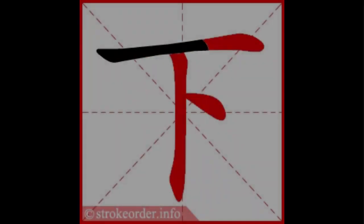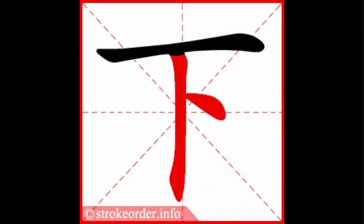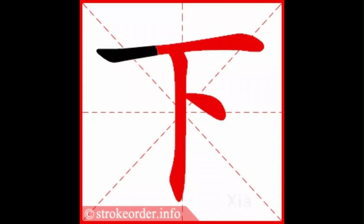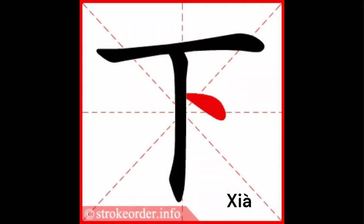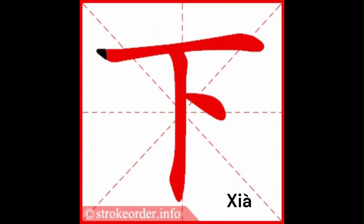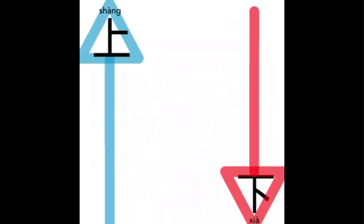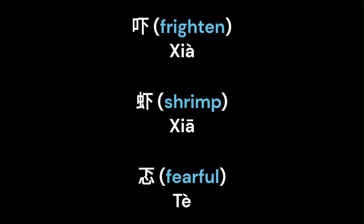In today's video, we'll teach you the Chinese character for down, 下. This is a fun character in the Chinese language because it looks like the opposite of up, and the contrast between the two characters is vivid and interesting. In radical form,